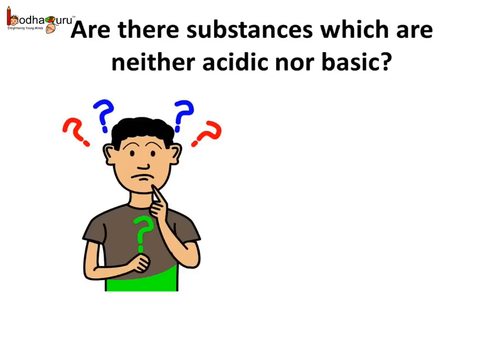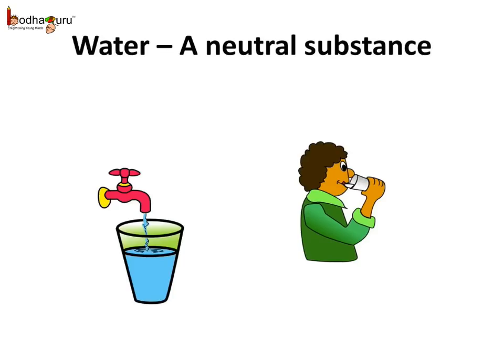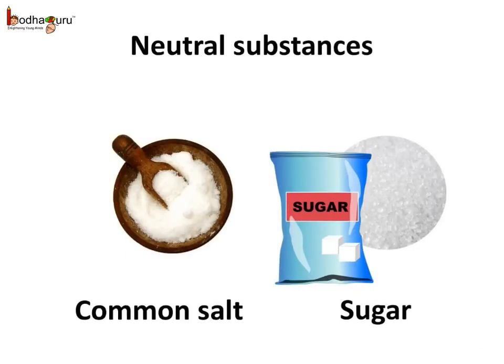Now you may wonder — are there substances which are neither acidic nor basic? Yes, and it is a very common one. Any guesses? The water we drink is neither acidic nor basic — we say water is a neutral substance. Apart from water, there are many neutral substances; for example, common salt which is sodium chloride, and the sugar we use daily, are also neutral.